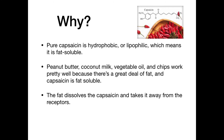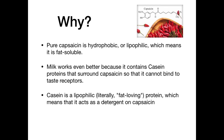To explain this, let's look at the solubility of capsaicin. Pure capsaicin is hydrophobic or lipophilic, which means it is fat soluble. Peanut butter, coconut milk, vegetable oil, and chips work pretty well because there is a great deal of fat, and capsaicin is fat soluble. The fat dissolves the capsaicin and takes it away from the receptors on our tongue. For milk, it's a similar case, but it works even better because it contains casein proteins that surround capsaicin so that it cannot bind to taste receptors. Casein is a lipophilic, or literally fat-loving, protein, which means that it acts as a detergent on capsaicin.